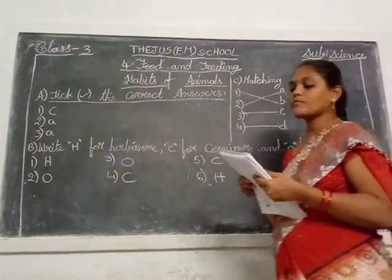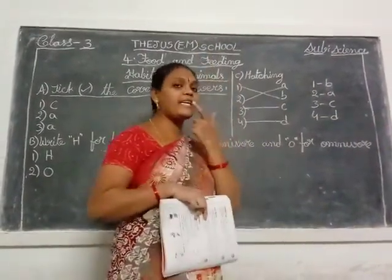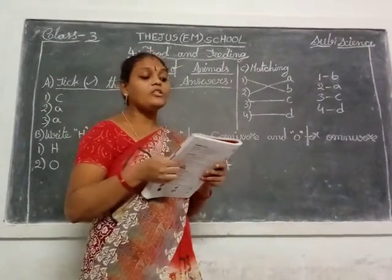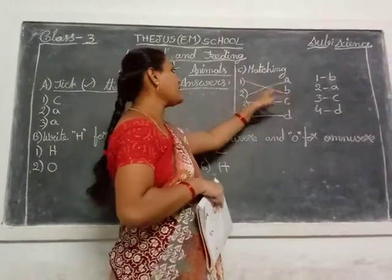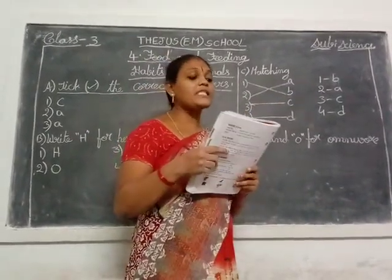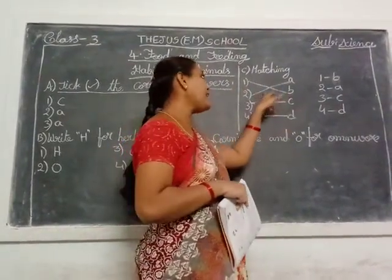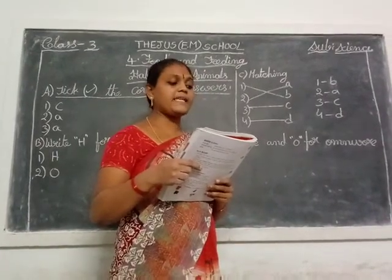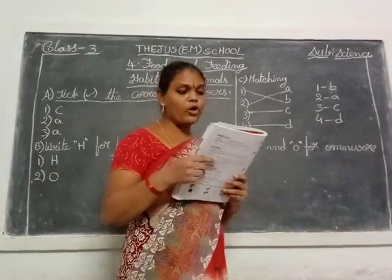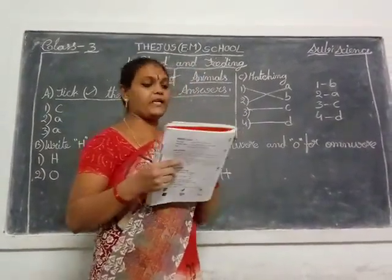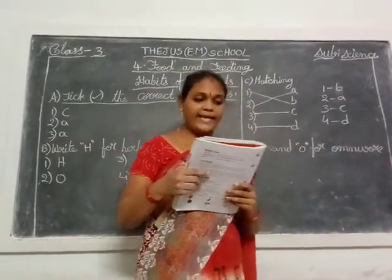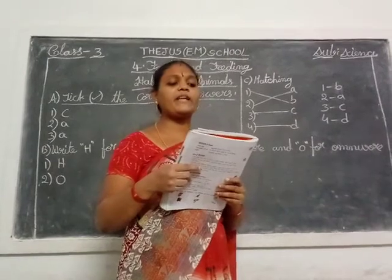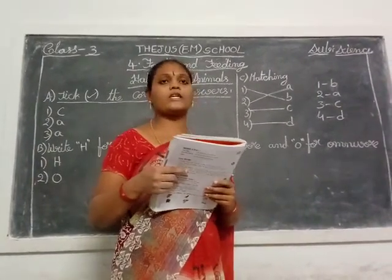Match the animals — which type of teeth do they have? Tiger: sharp, pointed and curved front teeth — match to B option. Next, squirrel: very sharp front teeth — second one to A option. Cow: biting front teeth — C option. Snake: no biting or chewing teeth — D option. So: tiger is B, squirrel is A, cow is C, snake is D. Take your pencils and complete this one.